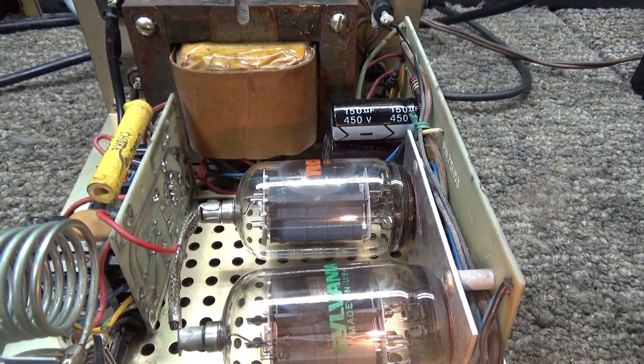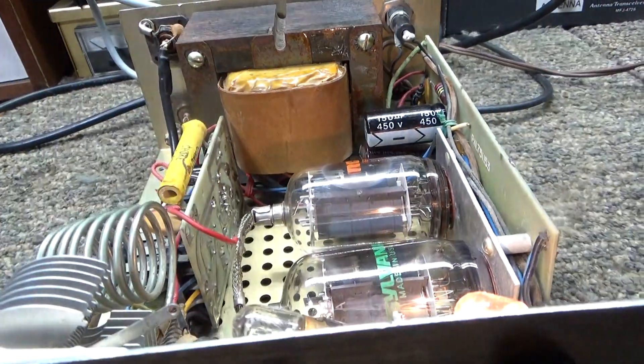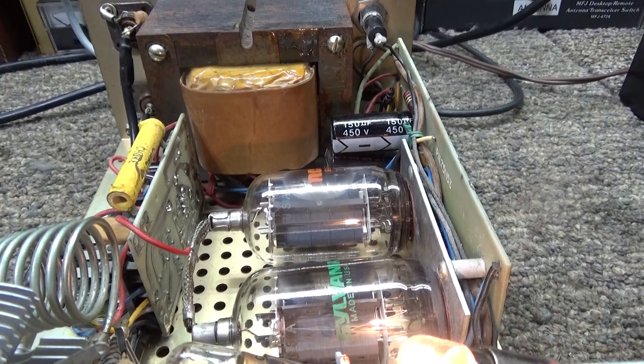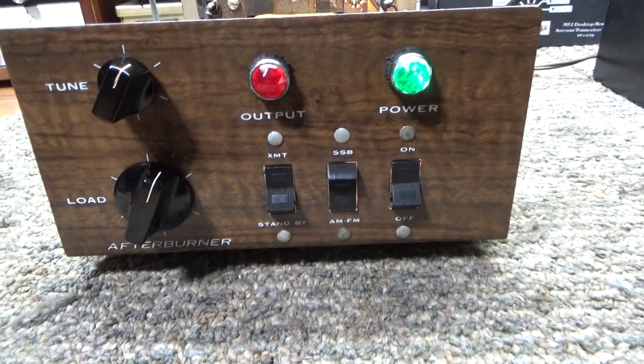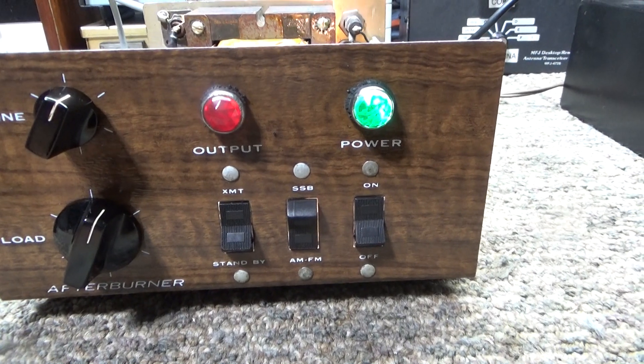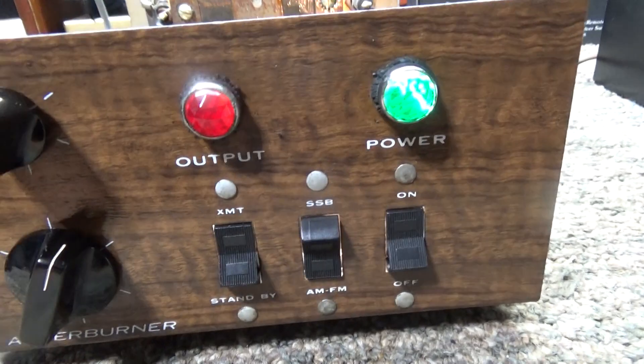They all have two of the smaller tubes, 6JU6, KM6, that family of two small tubes, the smaller version of the 6LQ6 tube. Some of the versions, most other ones, have meters on them. This earlier version has a light for the output.